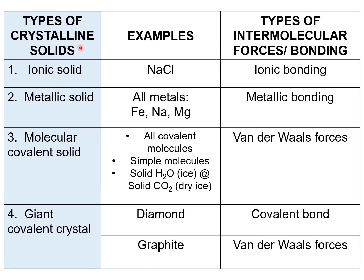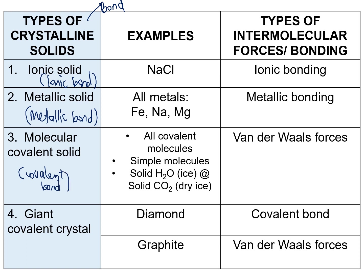Now I want to explain the types of crystalline solid. The reason there are different types is because they have different types of bonds. For ionic solid, it is formed through ionic bonding. For metallic solid, it is formed from metallic bonding. For molecular covalent solid, it is formed from covalent bonding. For giant covalent crystal, it is also formed from covalent bonding. So there are four types of crystalline solid: ionic solid, metallic solid, molecular covalent solid, and giant covalent crystal.